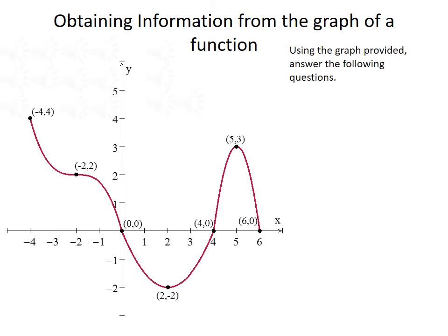Now let's talk about obtaining information from the graph of a function. Using this graph, we want to find the value of f(0). Since our x value is 0, we want to find the function value when x equals 0. Looking at the graph, when x equals 0, y is also equal to 0, so we have the point (0, 0). This means f(0) equals 0.